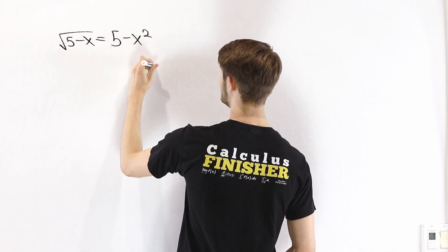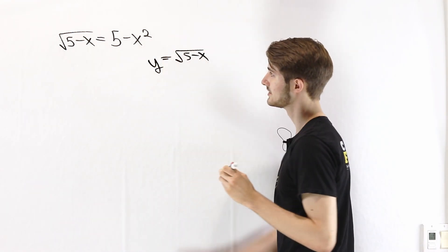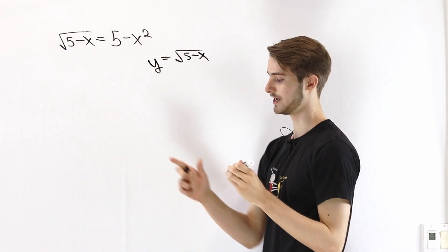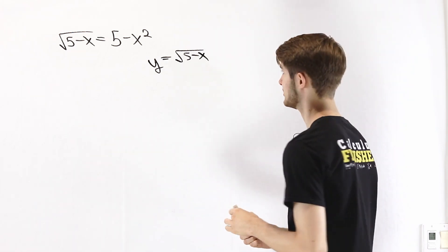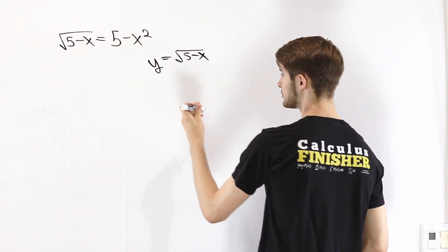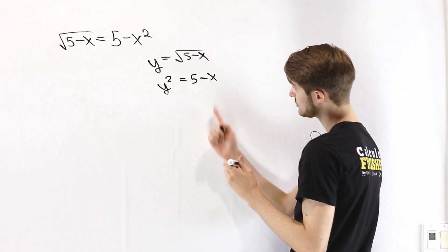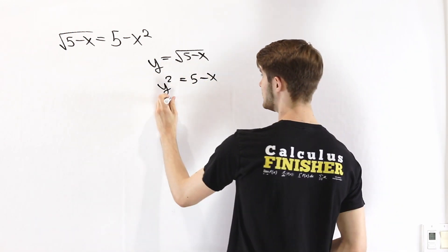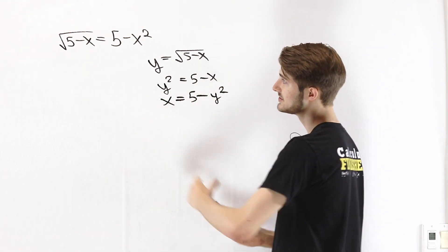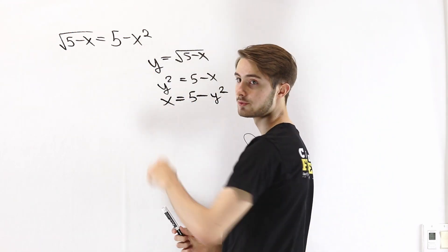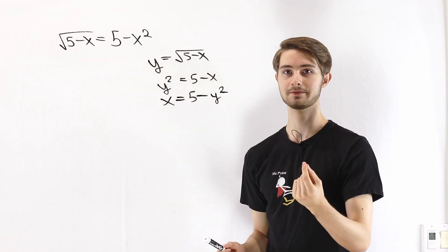In order to do that, we'll set y equal to the square root of 5 minus x — that's the function on the left — and solve for x in terms of y. We square both sides to get y squared equals 5 minus x, then solving for x gives x equals 5 minus y squared, which is exactly what we have on the right. So these two functions are inverses of each other.